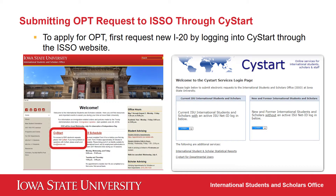To start the OPT application process, you will first need to request a new I-20 from the ISSO. To do so, you will need to log into SciStart with your NetID and password. You can find the link to SciStart on the ISSO homepage.